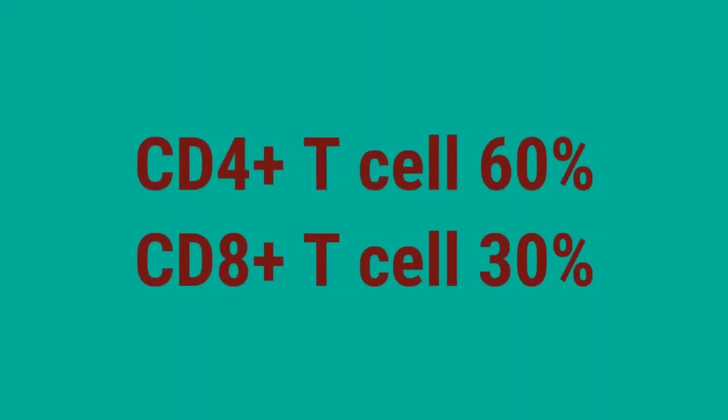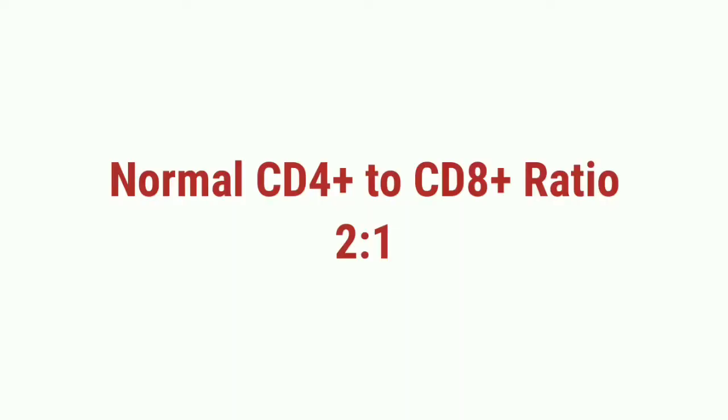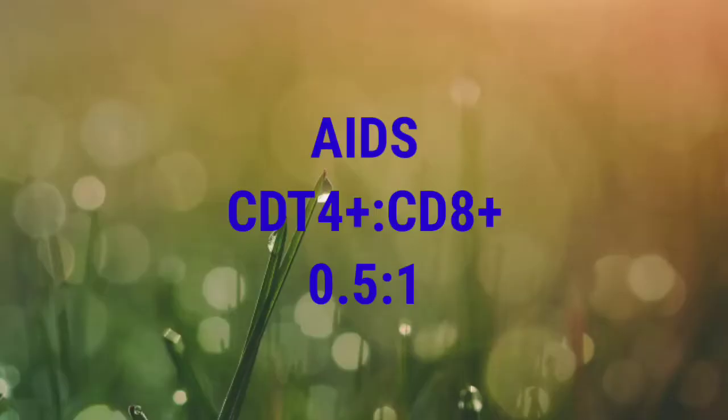T-cells can be subdivided into two main categories based on their surface markers. One is the CD4-positive T-cell, which makes up 60 percent of T-cells, and the second is the CD8-positive T-cell, which makes up 30 percent of the total T-cell population. This normal ratio of two to one can be altered drastically in certain disease states — for example, in AIDS it changes to a 0.5 to one ratio.